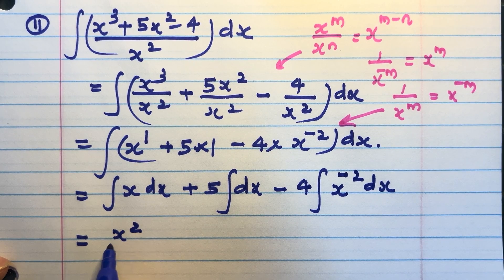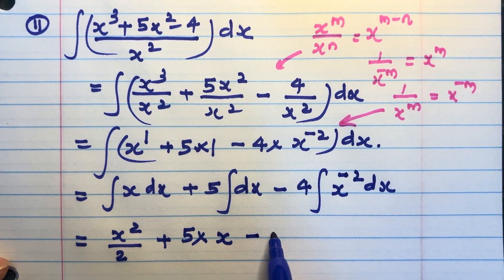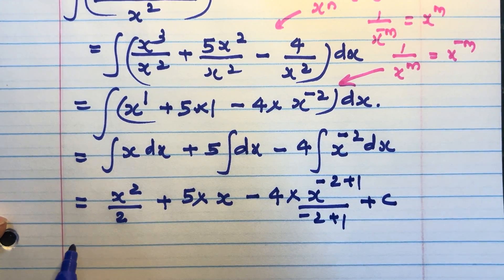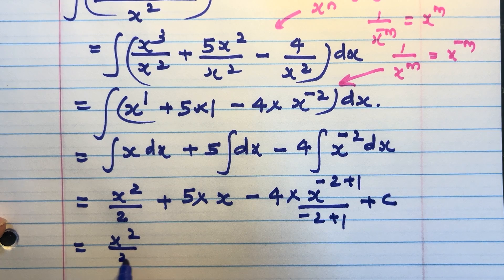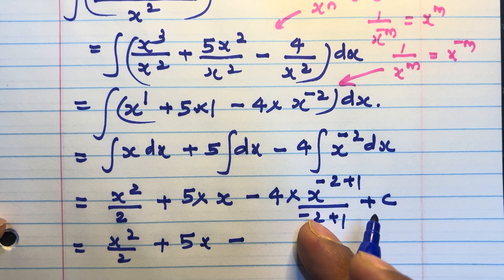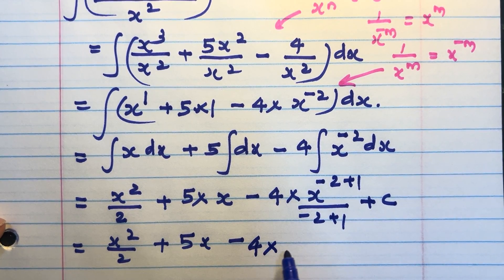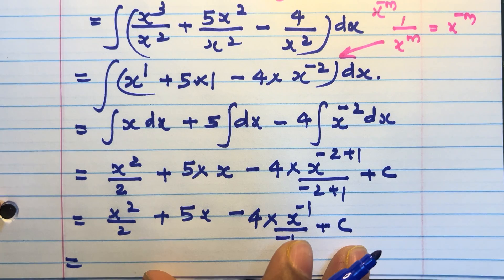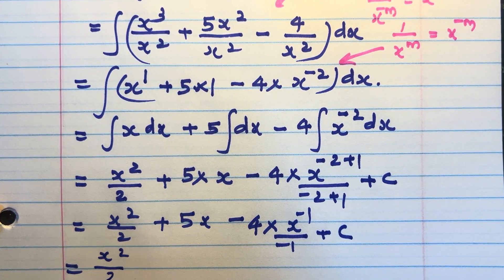Integral x dx = x²/2, plus 5·x, minus 4 · [x^(−2+1) / (−2+1)] + c. That equals x²/2 + 5x, and −2+1 = −1, so we get x^(−1)/(−1).